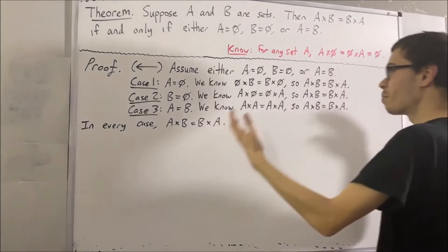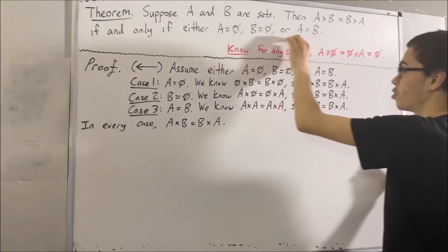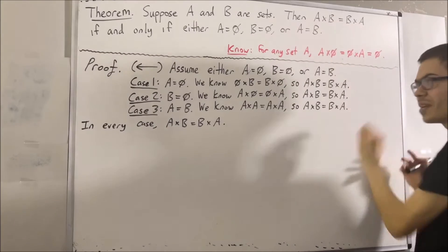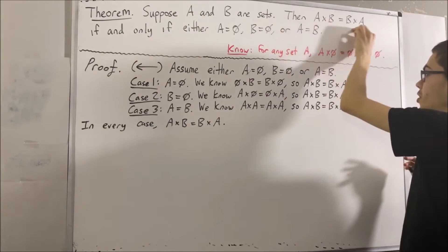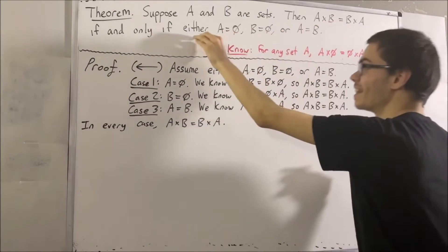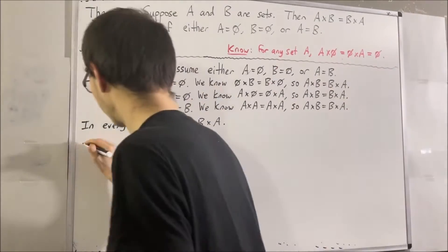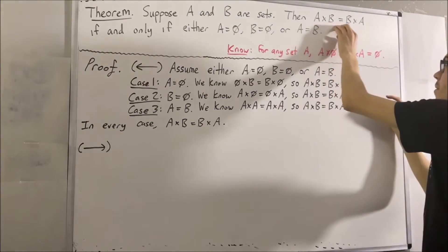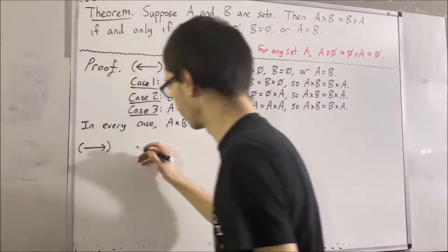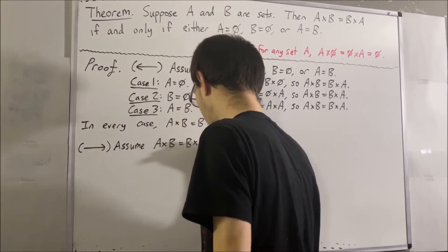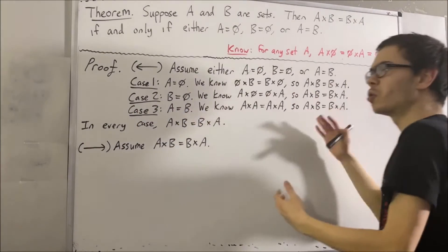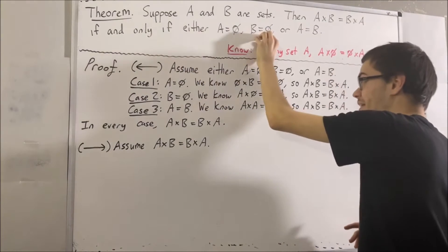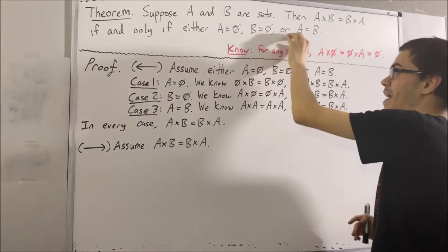And so, this proves that if the right-hand condition is true, then A times B equals B times A. So now, let's prove the other direction: if A times B is equal to B times A, then either A is the empty set, B is the empty set, or A is equal to B.